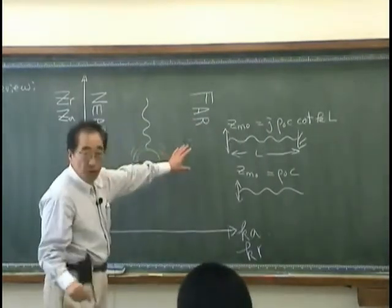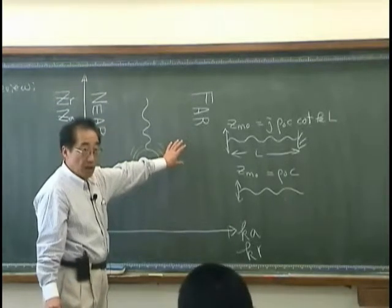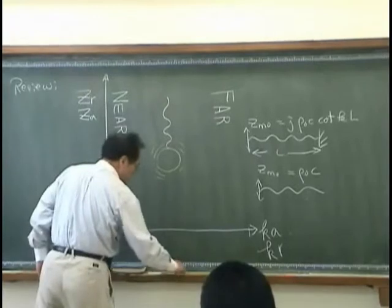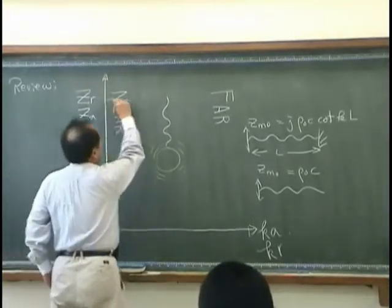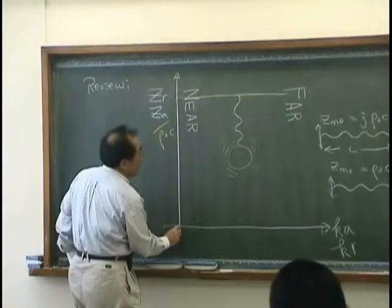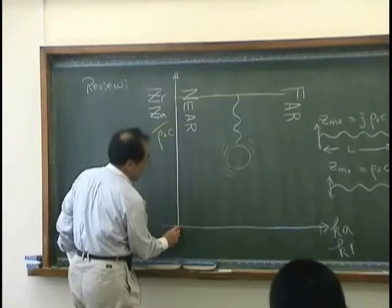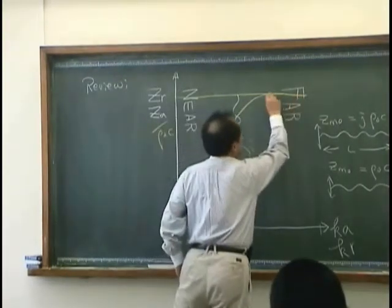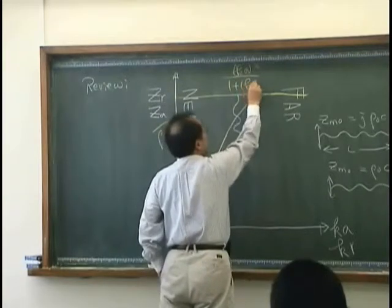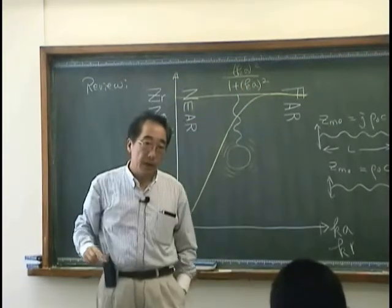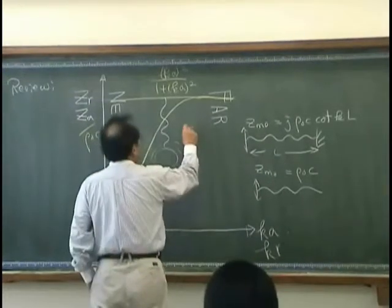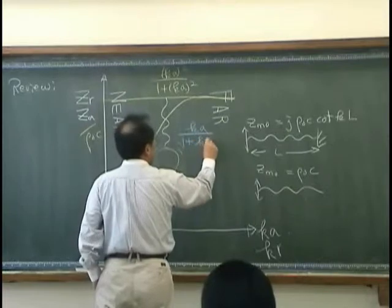Very similar things occur for the breathing sphere case too. So what we obtained was if we normalize those things with rho 0 C, then the real part of the radiation impedance looks like this and that is KA squared over 1 plus KA squared.